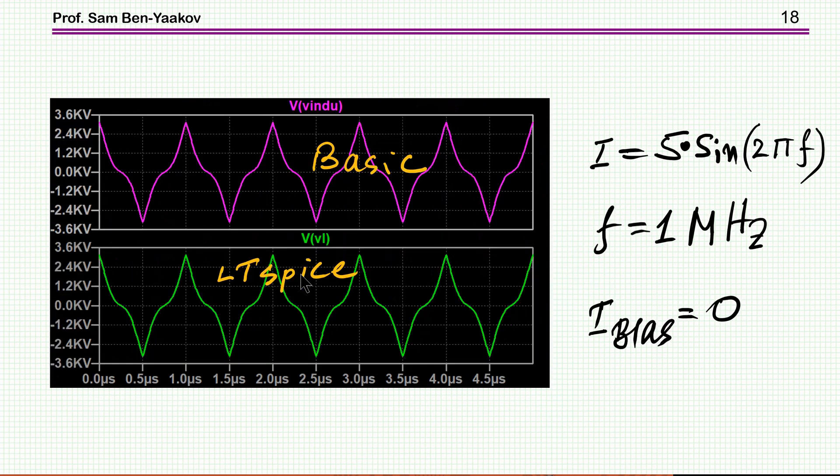Now I'm increasing the current to 5 milliamps in the two cases. Now I've separated them. And you see that for the basic and the LT Spice, I'm getting exactly the same. So these two models are properly describing the current dependent inductor.